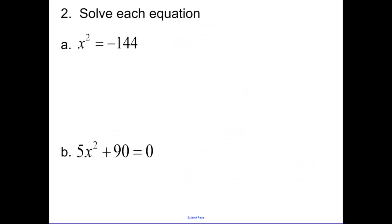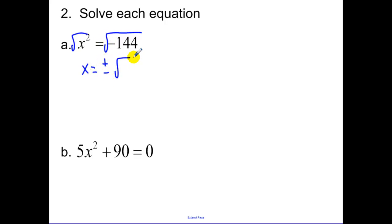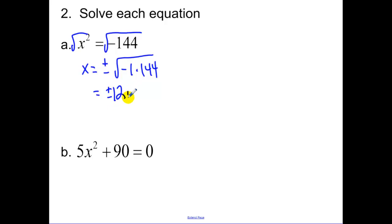Our next example: solving an equation. Remember, to solve an equation involving x squared, we square root both sides. That leaves us with x equals — don't forget your plus and minus. Negative 144 can be split into negative 1 times 144. Taking the square root of each gives us plus or minus 12i.